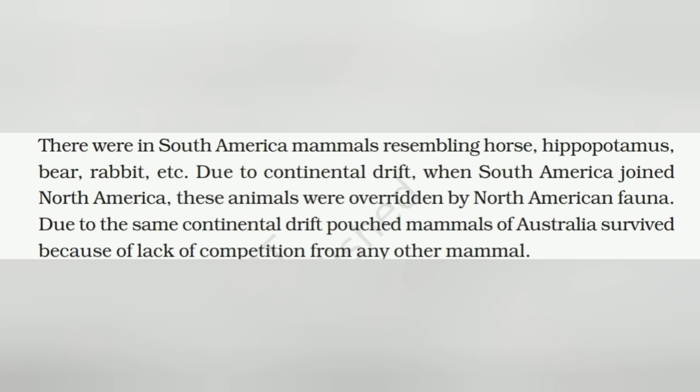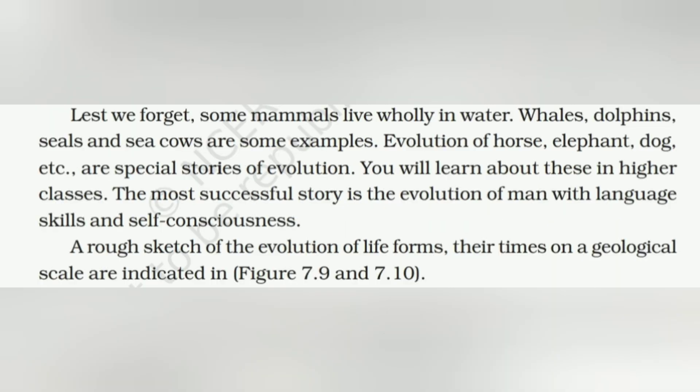In South America there were mammals resembling horse, hippopotamus, bear, and rabbit. Due to continental drift, when South America joined North America, these animals were overridden by North American fauna. Due to the same continental drift, pouched mammals of Australia survived because of a lack of competition from any other mammal — pouched mammals like the kangaroo. Some mammals live wholly in water: whales, dolphins, seals, and sea cows are some examples. The evolution of horse, elephant, dog, etc. are special stories of evolution to be learned in higher classes.